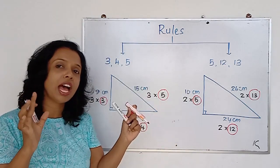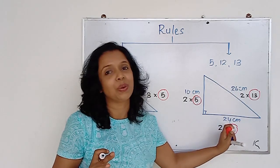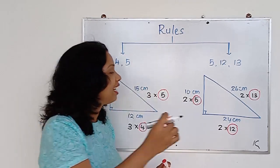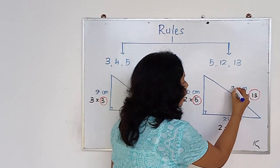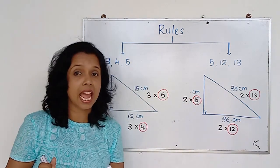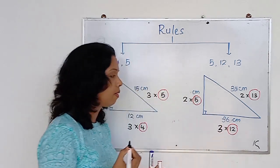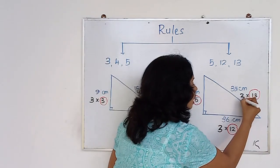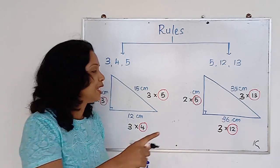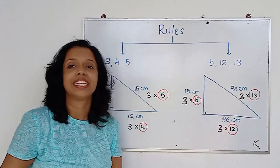Here is another example: the sides are 39 and 36. These are multiples of 3 — 36 is 3 times 12 and 39 is 3 times 13 — so this triangle follows the 5-12-13 rule with a multiple of 3. Therefore the missing side is 3 times 5 = 15 cm. It's very easy once you recognise the pattern.